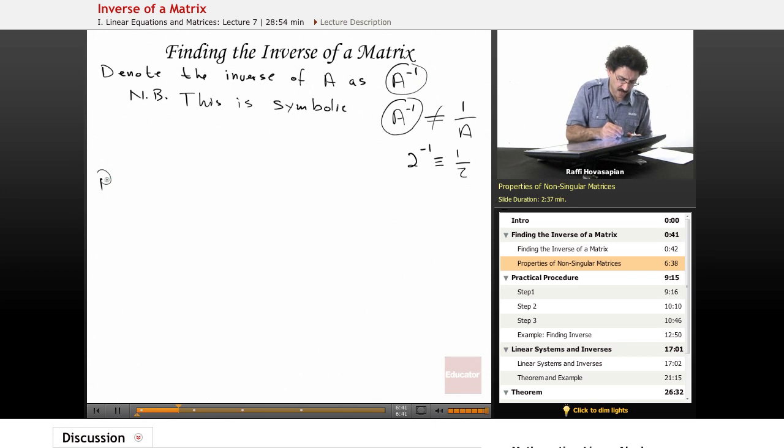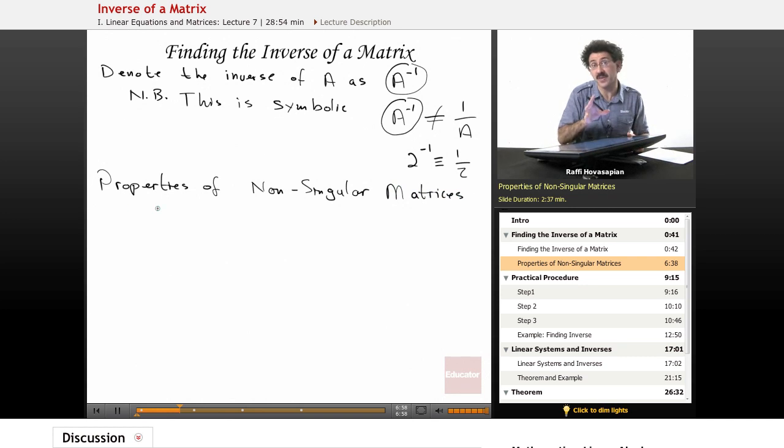Now let's list a couple of the properties of non-singular matrices. And again, non-singular means invertible, ones that actually have an inverse. Recall again, we're talking about square matrices, n by n, 2 by 2, 3 by 3, 4 by 4, and so on. We don't speak of inverses of other matrices.